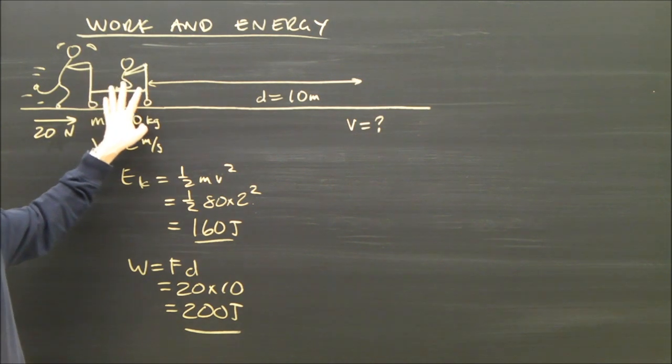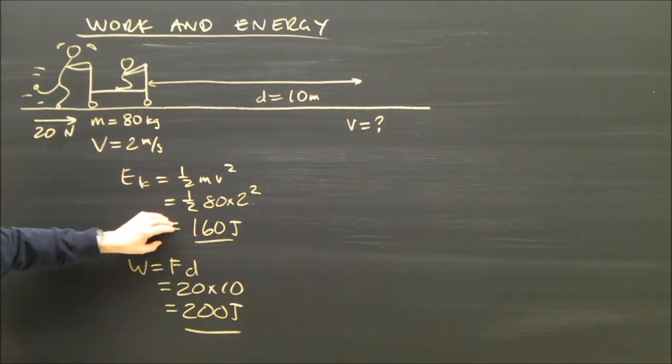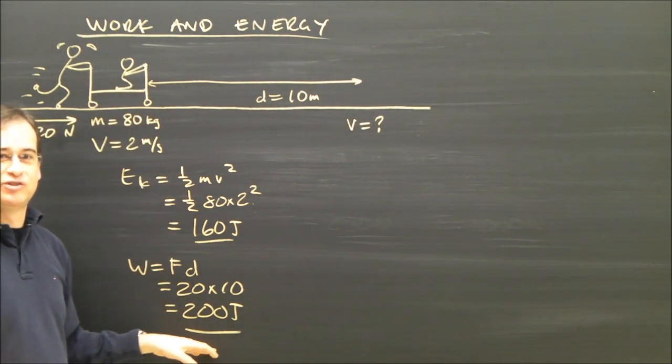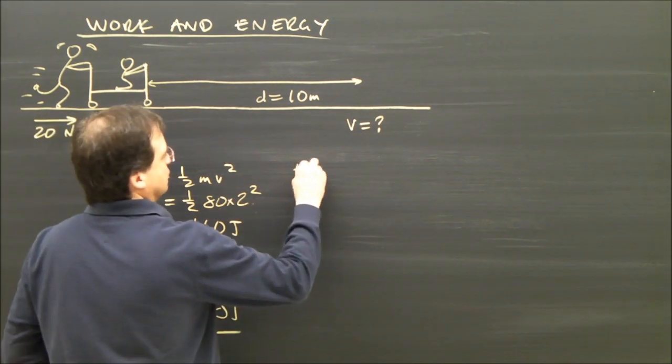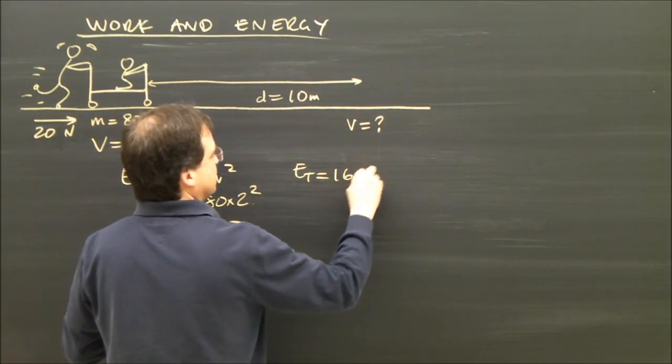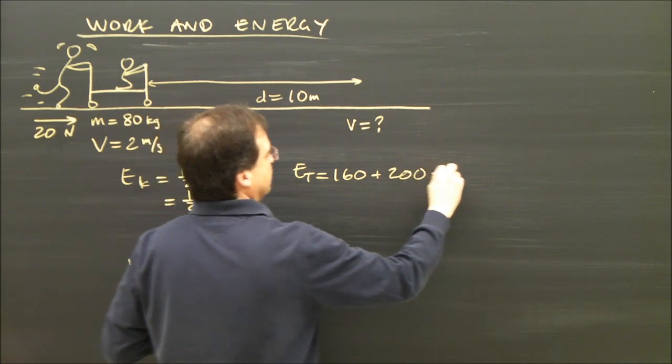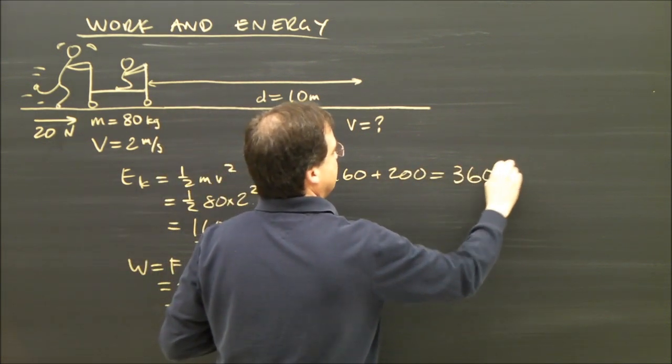The cart had kinetic energy already. It had 160. This person added 200 joules to it. So, the total energy they have now is 160 plus 200, 360 joules.